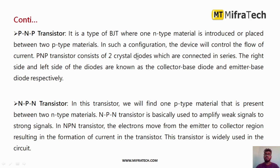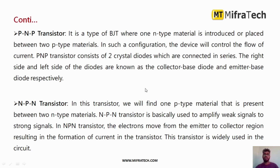The PNP transistor is a type of BJT where an N-type material is placed between two P-type materials. In this configuration, the device controls the flow of current. A PNP transistor mainly consists of two crystal diodes — as mentioned, a transistor is a combination of two diodes connected in series.